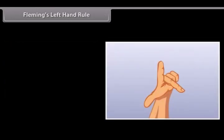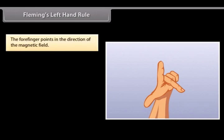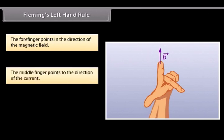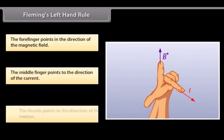Fleming's Left Hand Rule is a mnemonic to represent three directions. You need to stretch your thumb, forefinger and middle finger of your left hand. Each finger points to a specific direction. The forefinger points in the direction of the magnetic field. The middle finger points to the direction of the current. The thumb points to the direction of the motion. This is Fleming's Left Hand Rule.